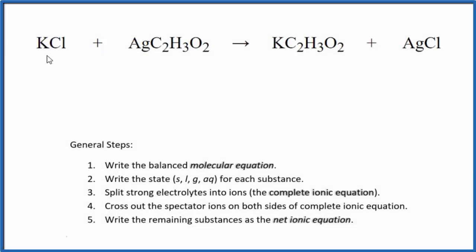In this video, we'll write the balanced net ionic equation for KCl plus AgC2H3O2. This is potassium chloride. This is silver acetate. This is the acetate ion here.